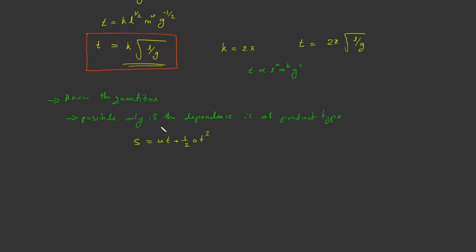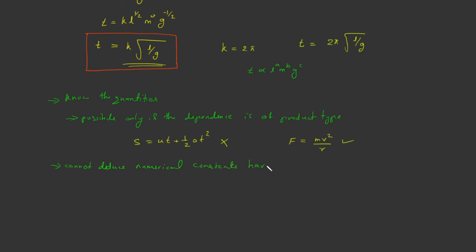You can derive an equation like t equals 2π times the square root of l by g, or the centripetal force f equals mv squared by r, because these are of product type. But you cannot derive equations that are a sum of two terms. The second limitation is that you cannot deduce numerical constants having no dimensions by using dimensional analysis.